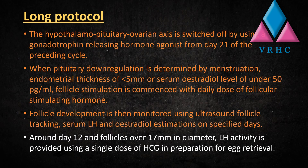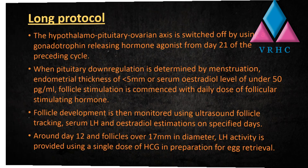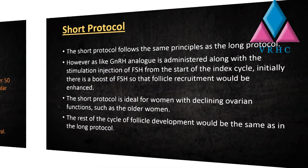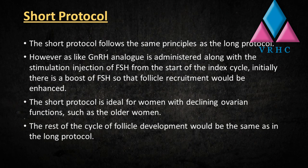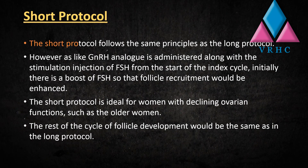Follicle development is monitored using ultrasound follicle tracking and serum LH and estradiol estimations on specified days. Around day 12, when follicles are over 17 mm in diameter, LH activity is provided using a single dose of HCG in preparation for egg retrieval. The short protocol follows the same principles as the long protocol.